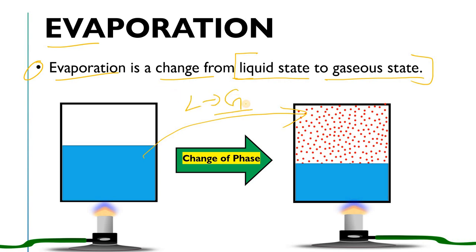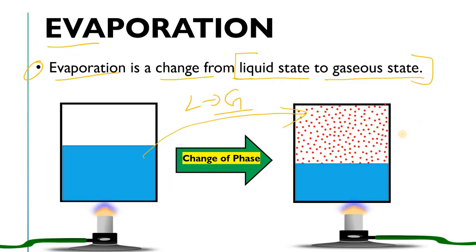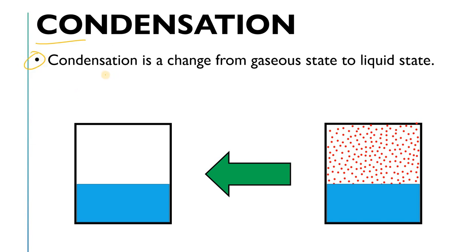Now let's also understand condensation. As we increase the temperature, the rate of evaporation increases — more and more vapor is produced, and the kinetic energy of molecules increases. Condensation is the change from gaseous state to liquid state. If you want to understand condensation better, there is a related term called the dew point, which we have discussed in previous videos.